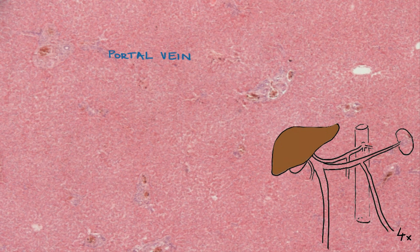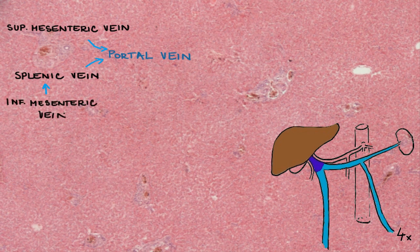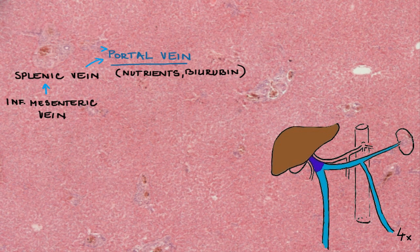The liver gets most of its blood from the portal vein, which is formed from the superior mesenteric vein and the splenic vein, which drains the inferior mesenteric vein. This blood is rich in nutrients that are absorbed in the digestive tract and in bilirubin. Bilirubin is a product of the degradation of hemoglobin, which is located within red blood cells. These cells die in the spleen.